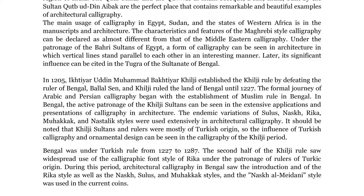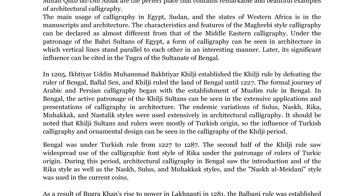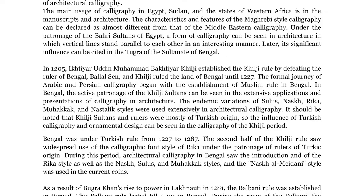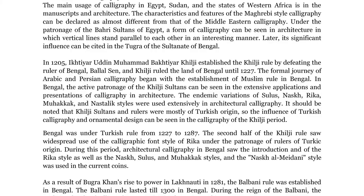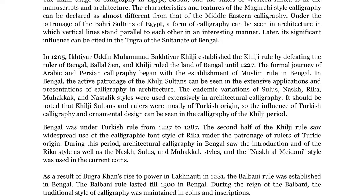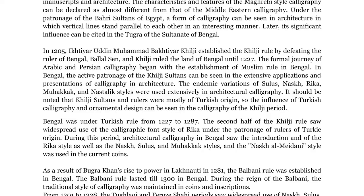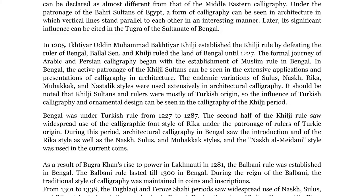In 1205, Iktia Uddin Muhammad Bakhtiar Khilji established the Khilji rule by defeating the ruler of Bengal, Balil Sen, and Khilji ruled the land of Bengal until 1227. The formal journey of Arabic and Persian calligraphy began with the establishment of Muslim rule in Bengal. In Bengal, the active patronage of the Khilji sultans can be seen in the extensive applications and presentations of calligraphy in architecture.